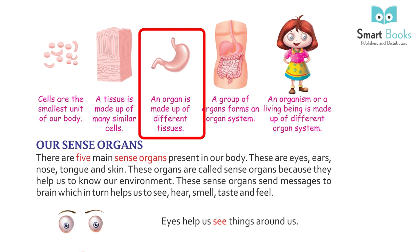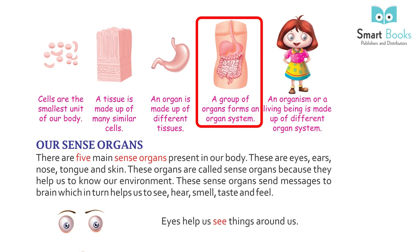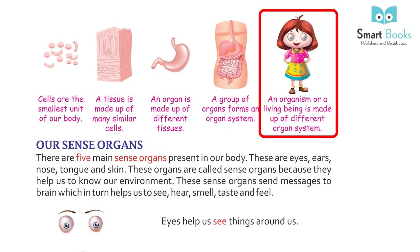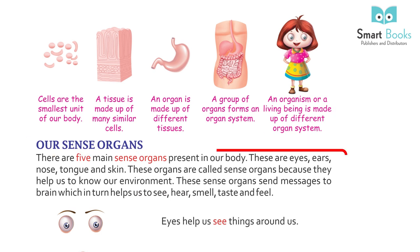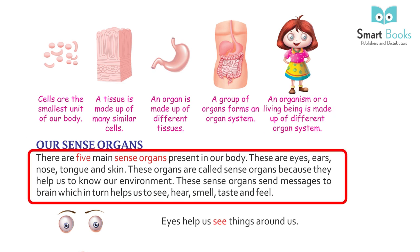A group of organs forms an organ system. An organism or a living being is made up of different organ systems. There are five main sense organs present in our body.